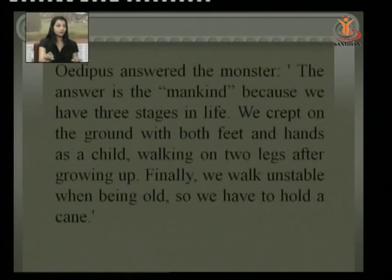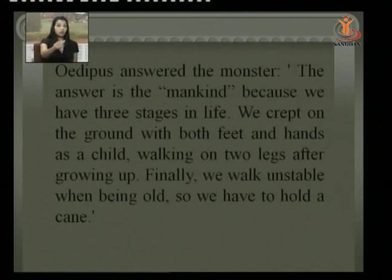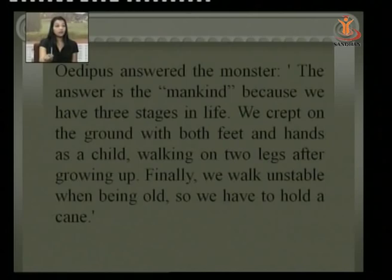The answer Oedipus gave was mankind — because we have three stages in life. As a child, we crawl on both feet and hands, meaning four legs in the morning. When we grow up we walk on two legs, energetic and matured — that is noon. Finally, when we are old and unstable, we hold a stick or cane, making three in the evening.